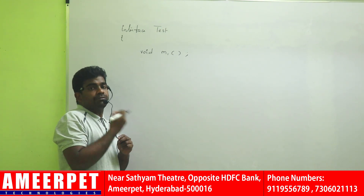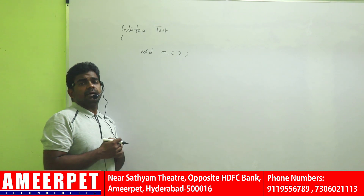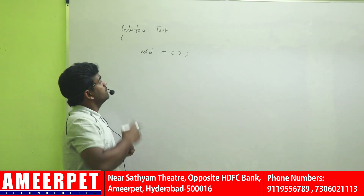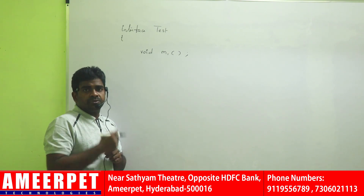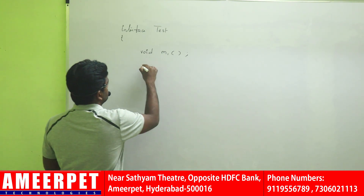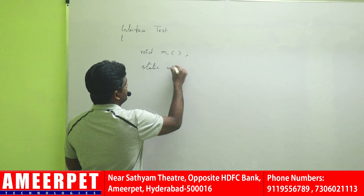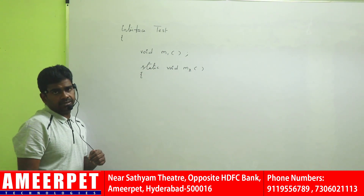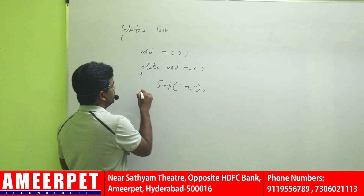But in JDK 8, it is allowed to define static methods inside the interface. Static members — static methods — represent the common functionality of all objects. The interface is implemented by many classes, and for all those objects there may be common functionality represented with the static method. If you define any method with a static keyword, it is called a static method. This static method M2 is allowed inside the interface since JDK 7.